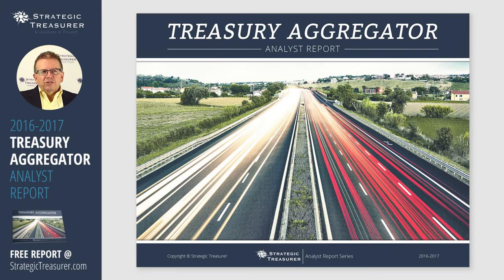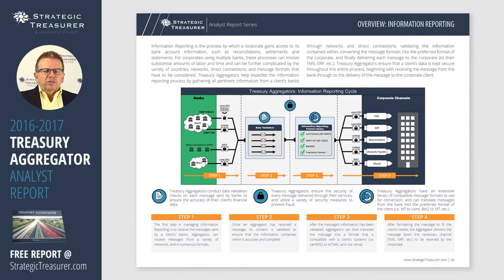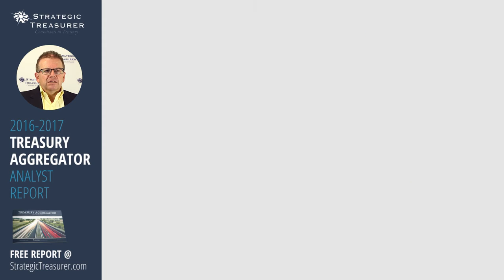So first of all, what is a Treasury Aggregator? There are two key elements of a Treasury Aggregator. One is multibank reporting. Multibank reporting is the process where a Treasury Aggregator takes information from multiple banks — balances, transactions — and consolidates, gathers that information, consolidates it, and provides it to whatever system or systems the company needs.